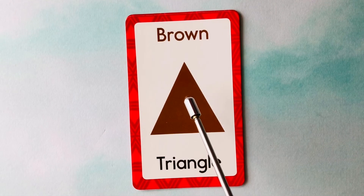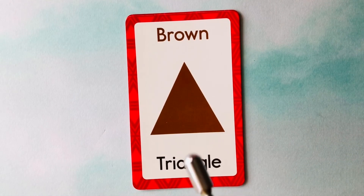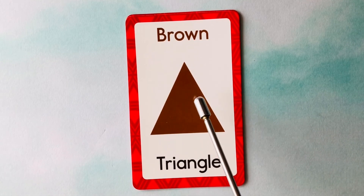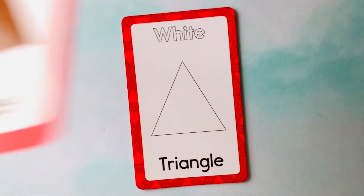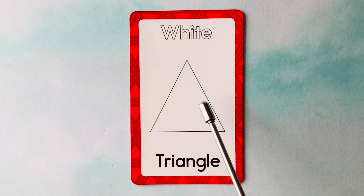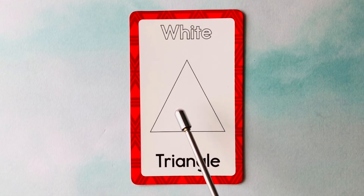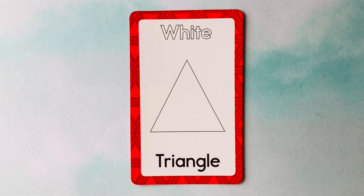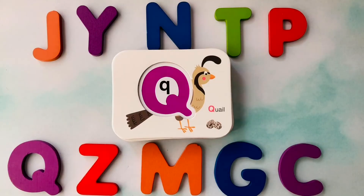This is a triangle. What color is this triangle? It's a brown triangle. This is also a triangle. What color is this triangle? It's a white triangle. This is a white triangle. You did a fantastic job.